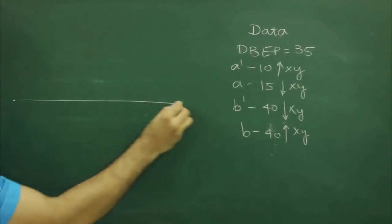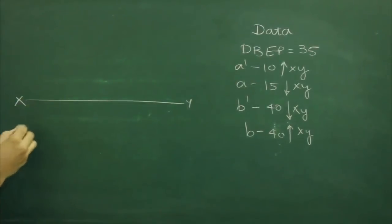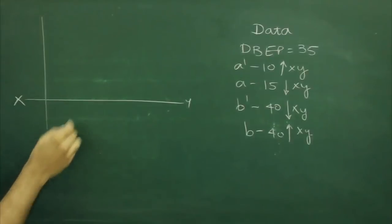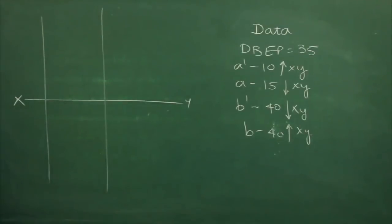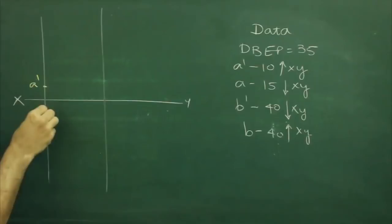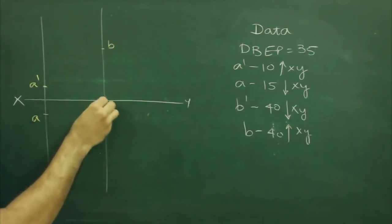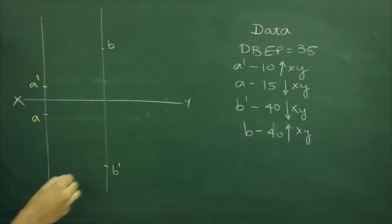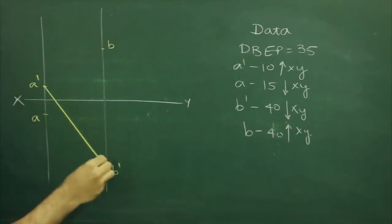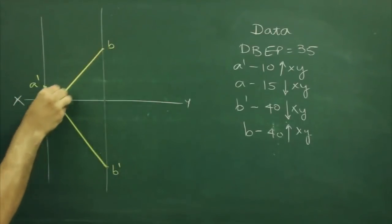First we will draw XY line, we will draw the projectors, we will mark point A' and A and 40mm down we mark B' and 40mm up we mark B. Now when you join, the front view would be like this and top view would be like this.